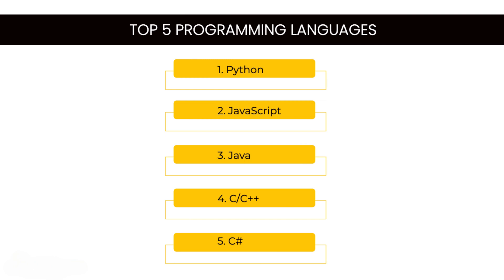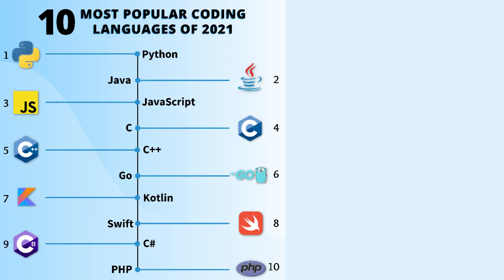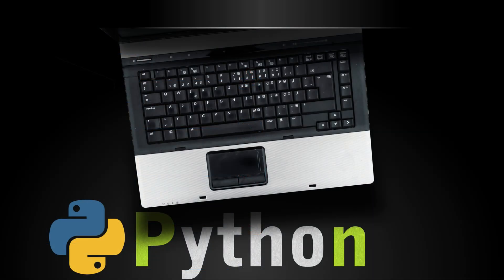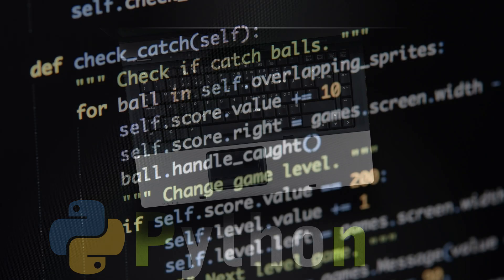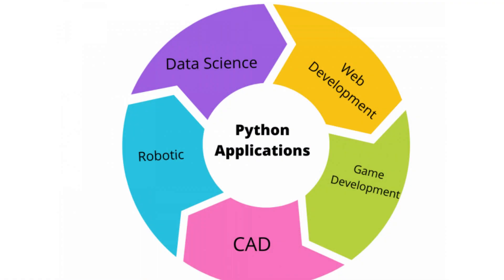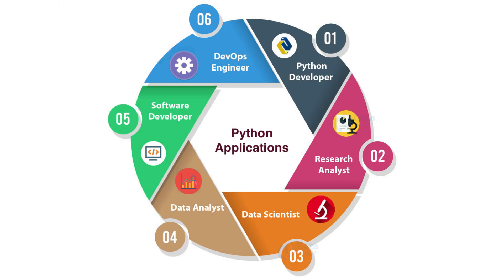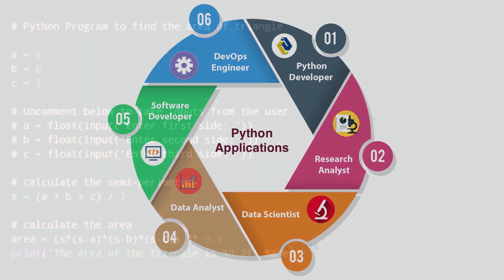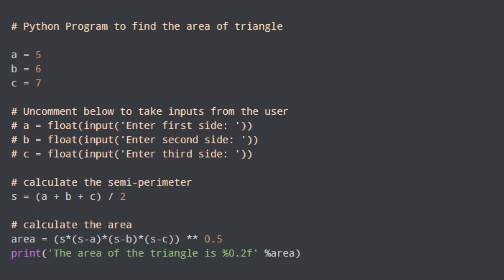Now that we have covered the factors to consider, let's explore some popular programming languages that are great for beginners. Keep in mind that these recommendations are based on their versatility, ease of learning, and wide industry adoption. Our first recommendation is Python. Python is known for its simplicity and readability, making it an excellent choice for beginners. It's widely used in various domains like web development, data analysis, artificial intelligence, and scientific computing. Learning Python can give you a solid foundation to explore other languages and concepts. Here is an example of Python programming code.